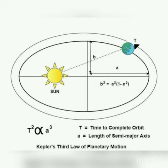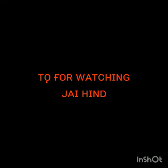Now, we discuss about Kepler's 3rd law. This law is also known as the law of periods. According to Kepler's law of periods, the square of the time period of revolution of a planet around the sun in an elliptical orbit is directly proportional to the cube of its semi-major axis.